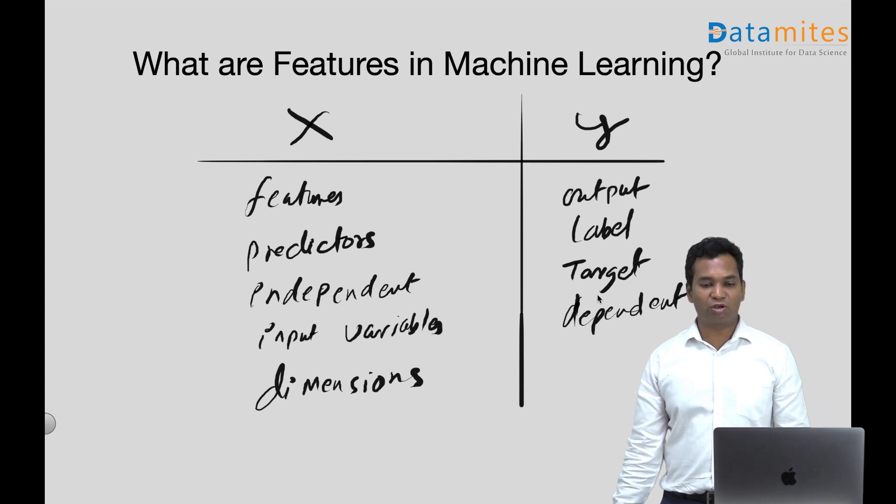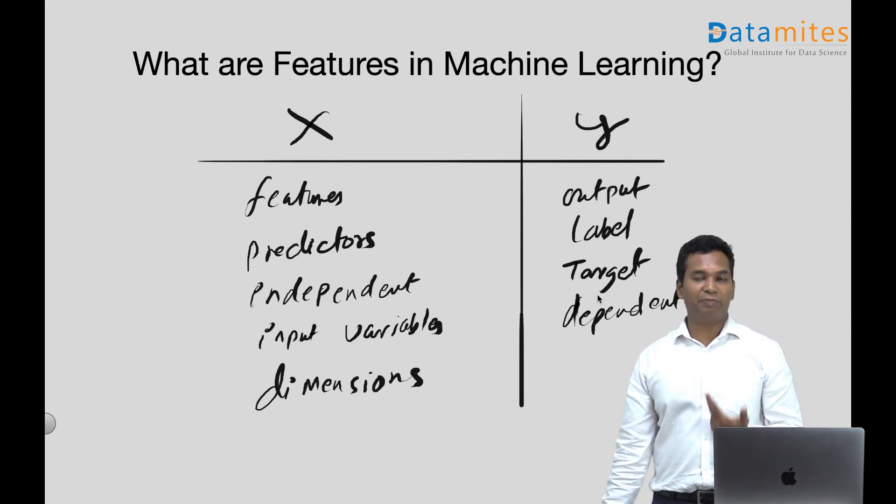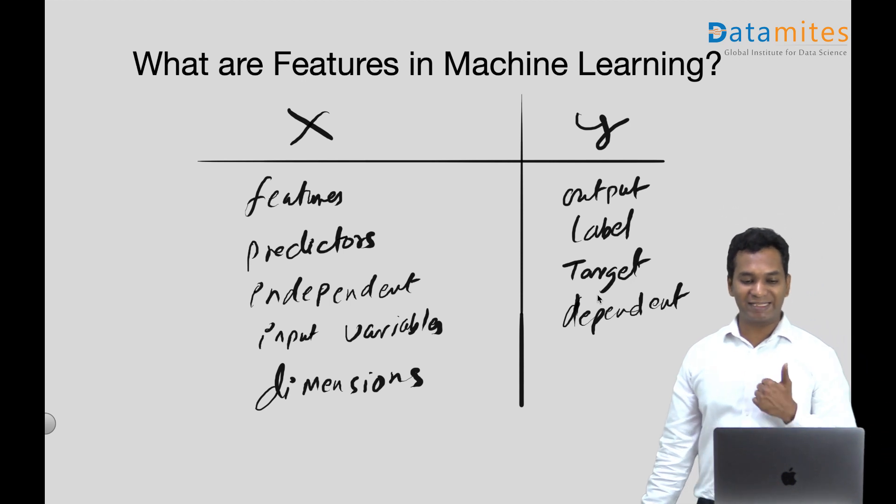So these are all the same. Your target variable is called as output variable, label, or target, or dependent variable. And the input variables are called features, which is the question here, predictors, independent variables, input variables, and dimensions.